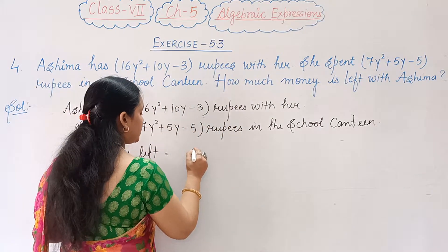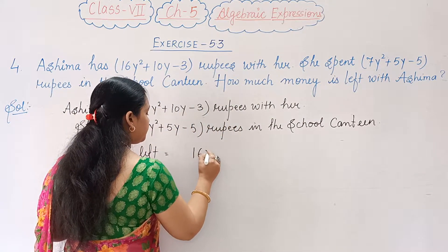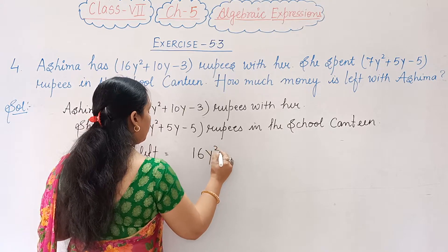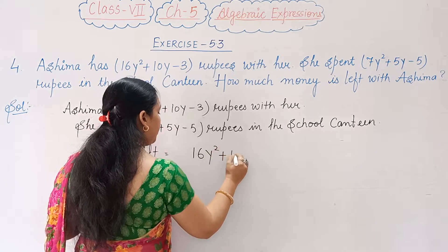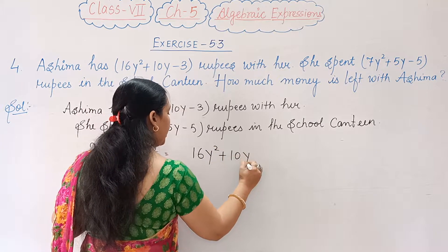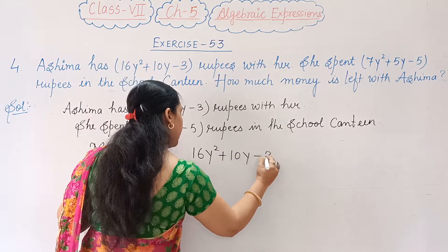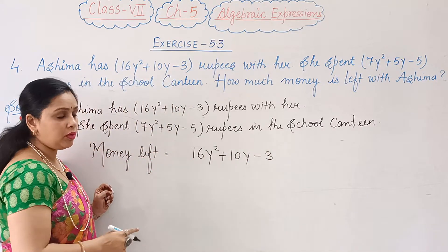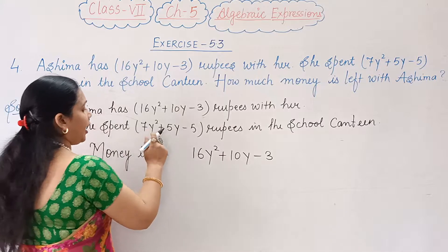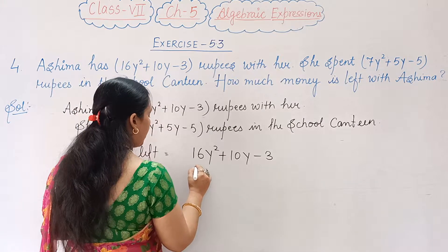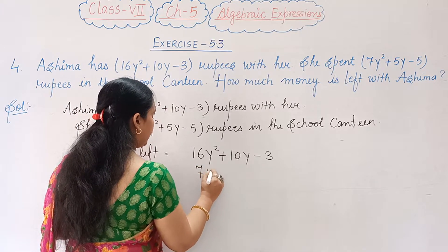You have 16y squared plus 10y minus 3. This is the total amount. We subtract what was spent in the canteen.